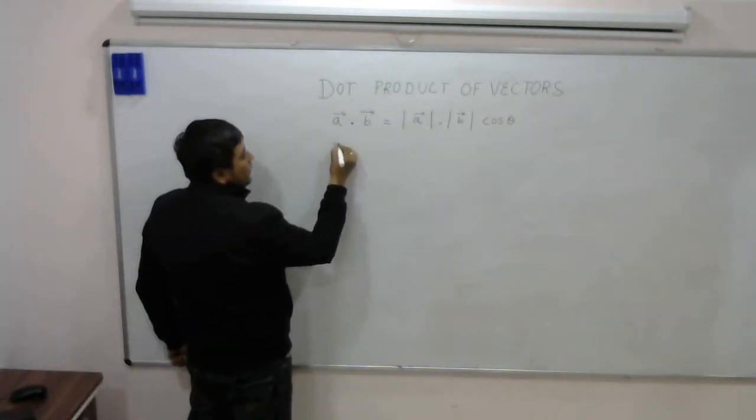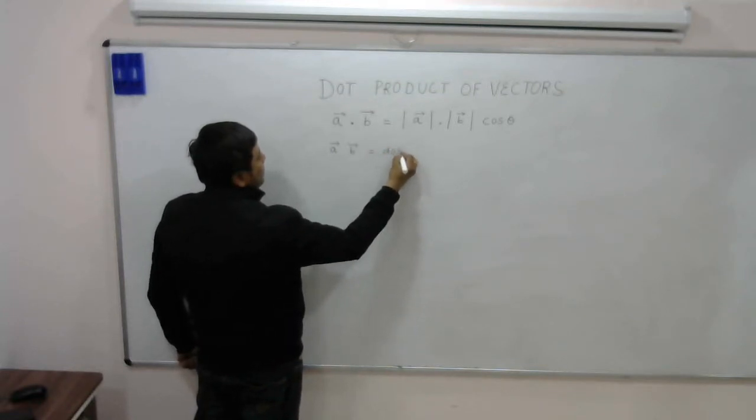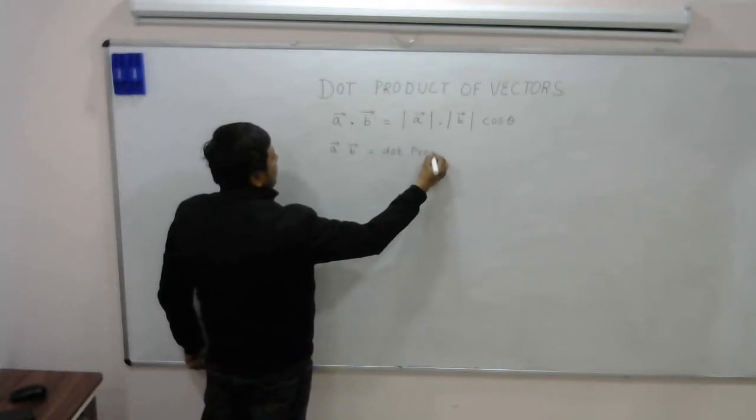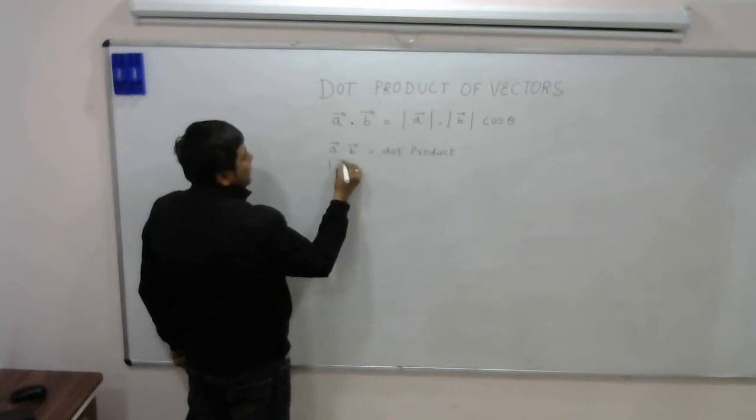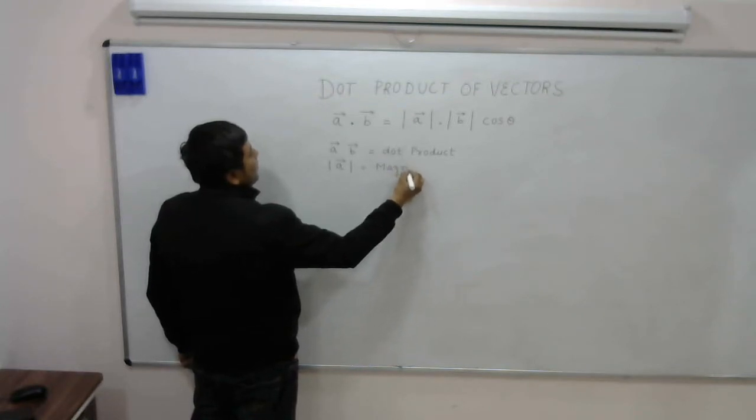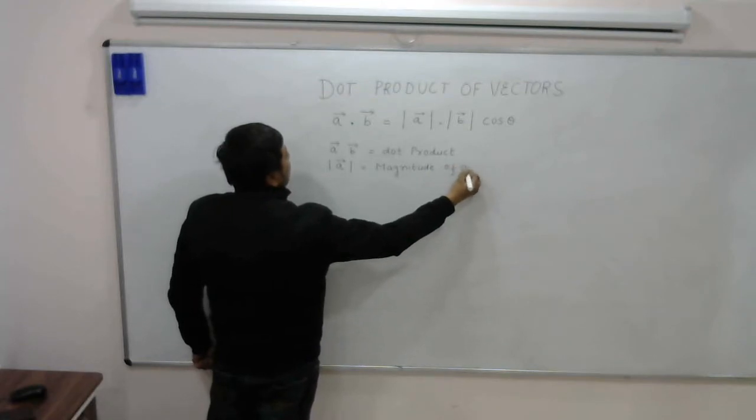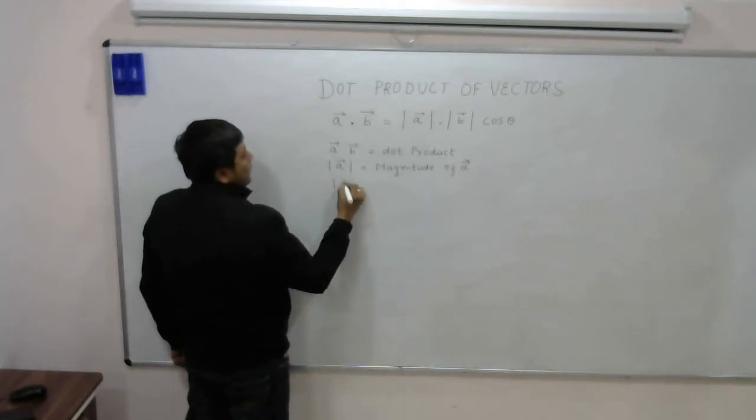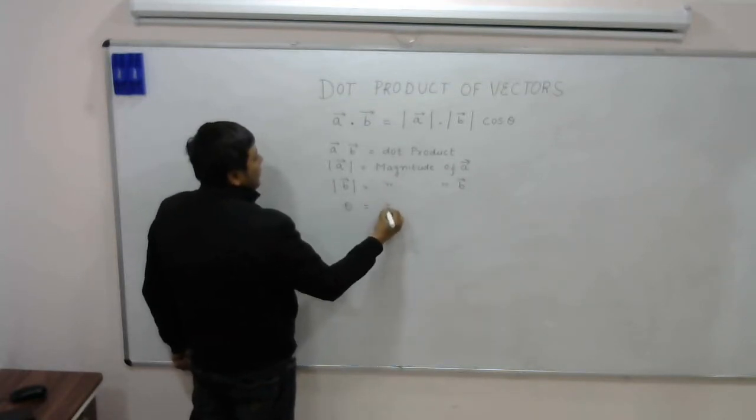So A dot B is the dot product. This is magnitude of A. This is mod B, magnitude of B vector. And theta is the angle between the two vectors.